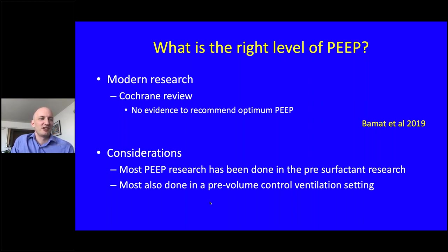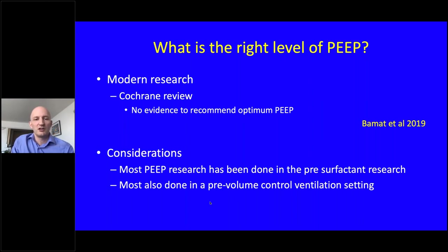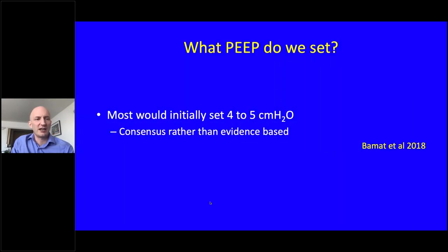What's the right level of PEEP? Modern evidence shows we don't really have strong evidence. The numbers used in practice come from the pre-surfactant era, suggesting ideal PEEP is between 4 and 5, with 6 being too much and 3 too low in most studies. However, most of our babies now receive surfactant if preterm, meaning their lungs may be more compliant and forgiving of differing PEEP levels. In practice, most would initially set a PEEP of 4–5 cmH₂O — consensus rather than evidence-based.